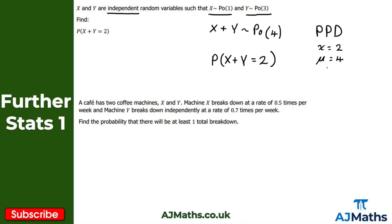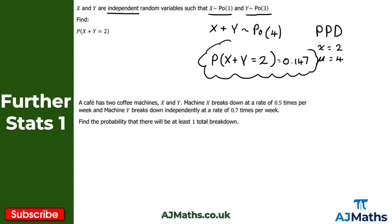Once you press enter you'll get your probability. To three significant figures what you should get is 0.147, and that is our solution to the first example.